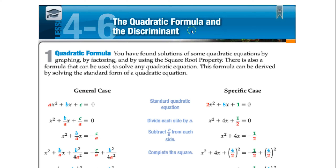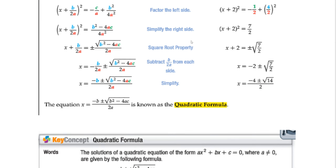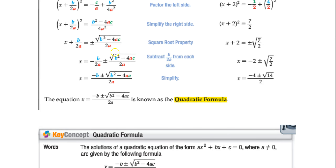This lesson is all about using probably most people's favorite way of solving the quadratic equation — that's using the quadratic formula. You guys have probably seen it: x equals negative b plus or minus the square root of b squared minus 4ac, all over 2a.